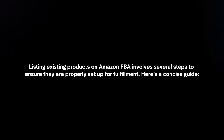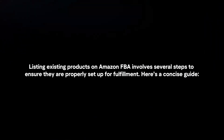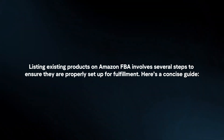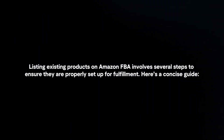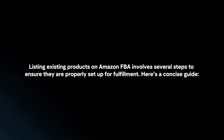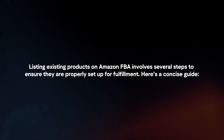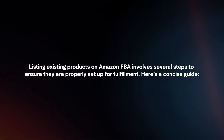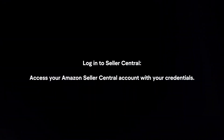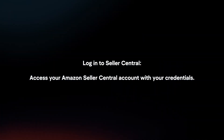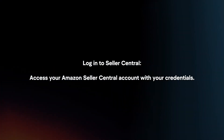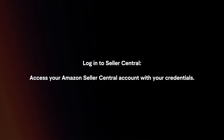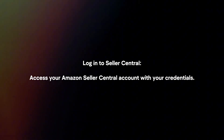Listing existing products on Amazon FBA involves several steps to ensure they are properly set up for fulfillment. Here's a concise guide. Login to Seller Central and access your Amazon Seller Central account with your credentials.